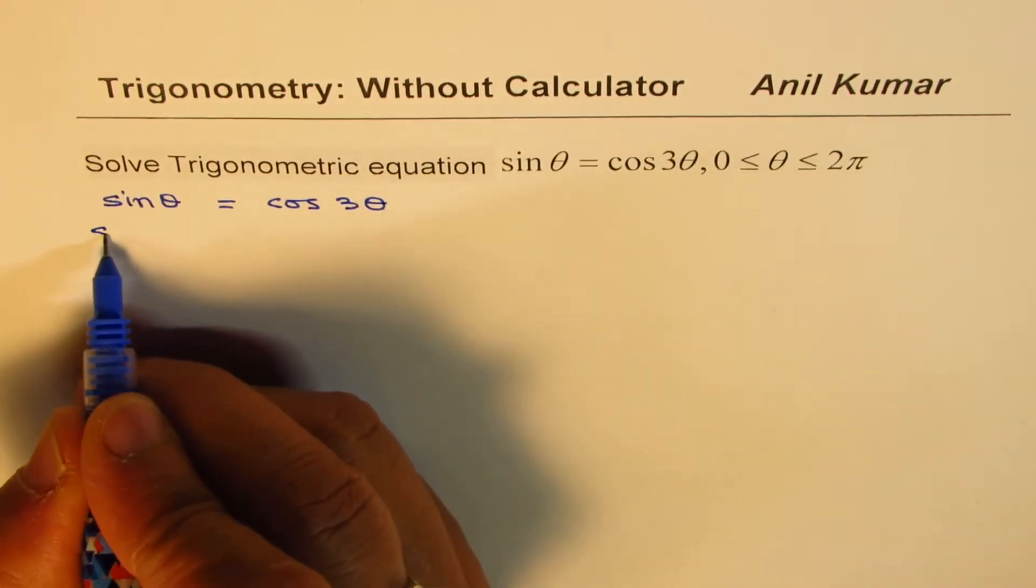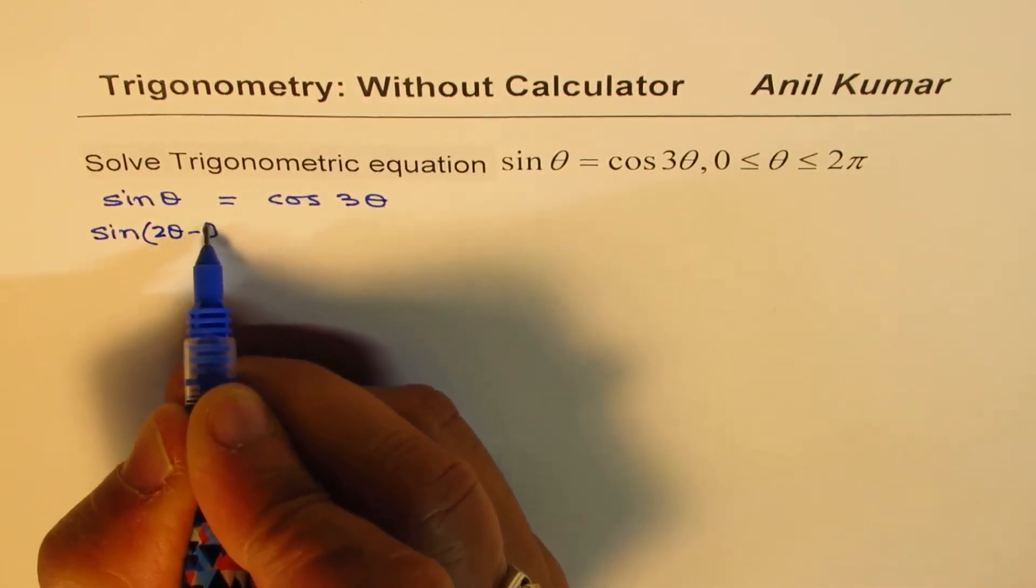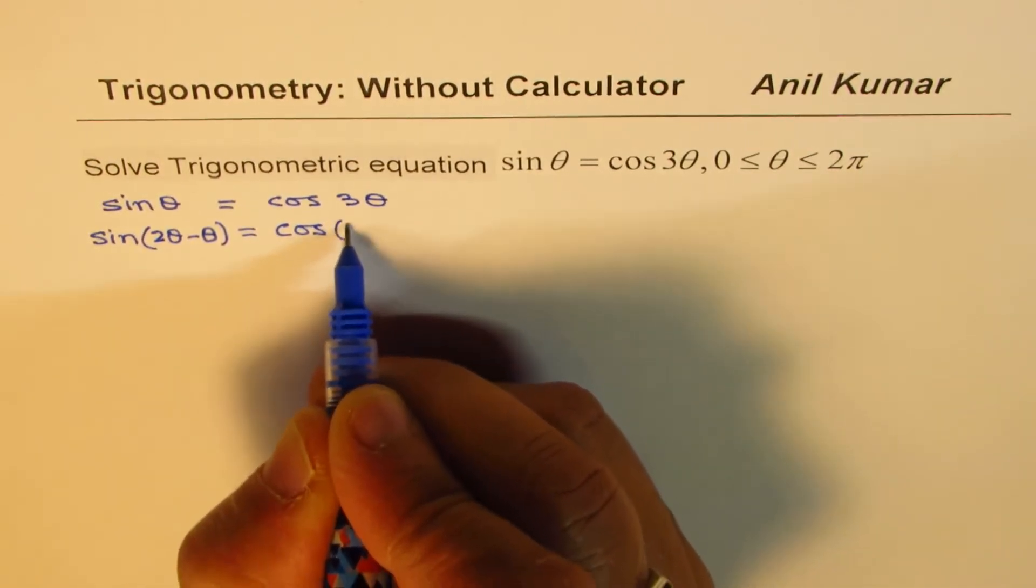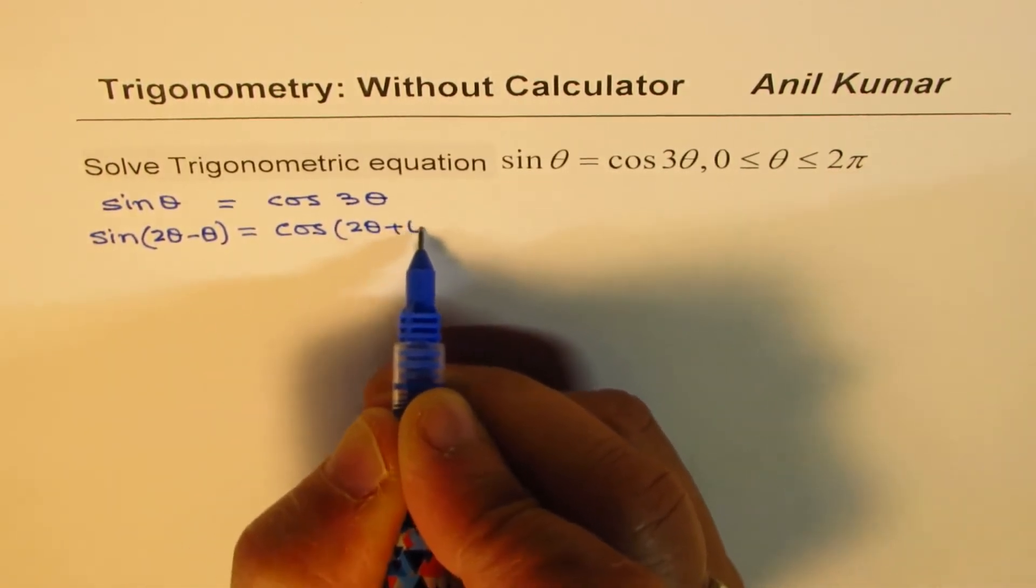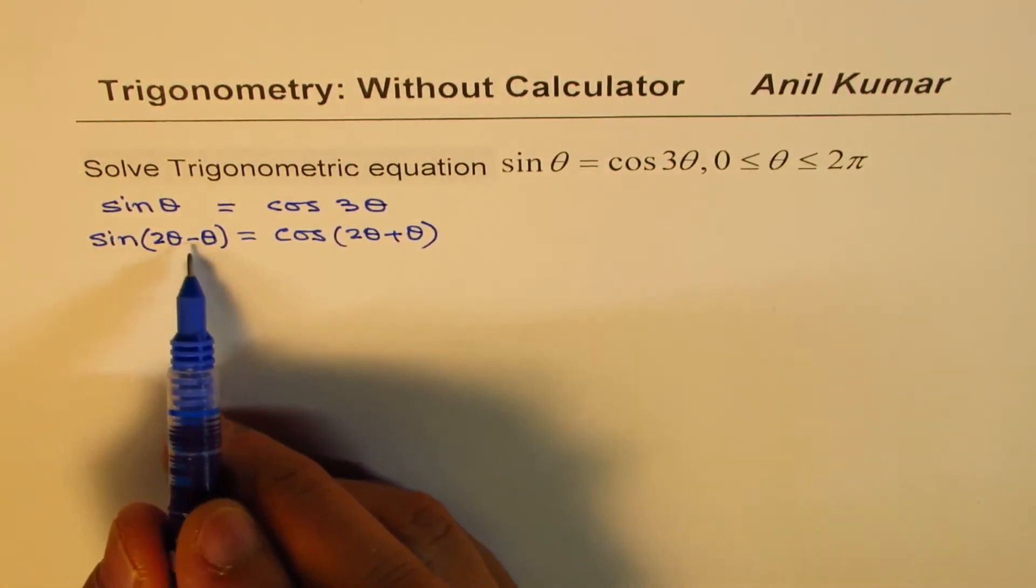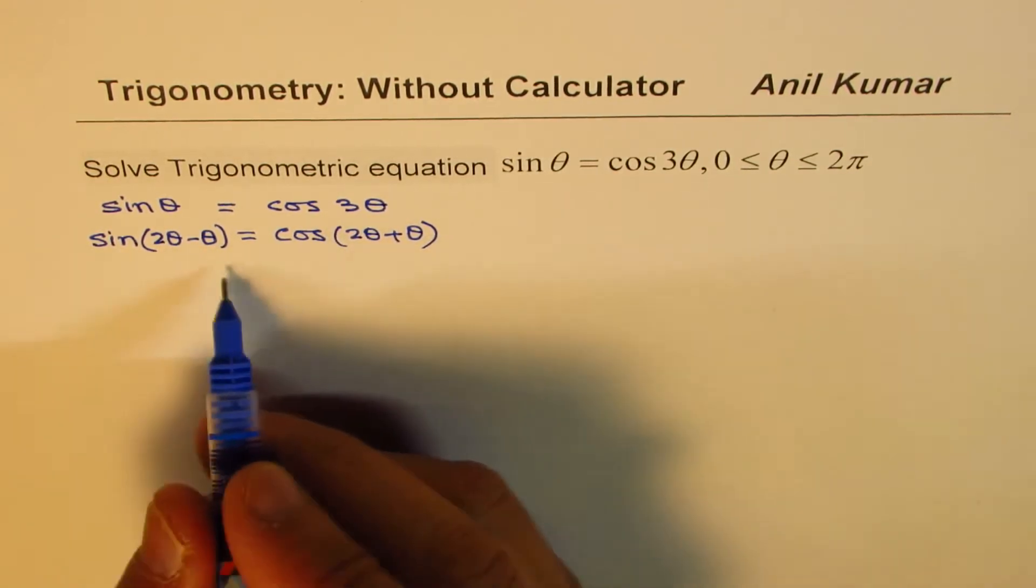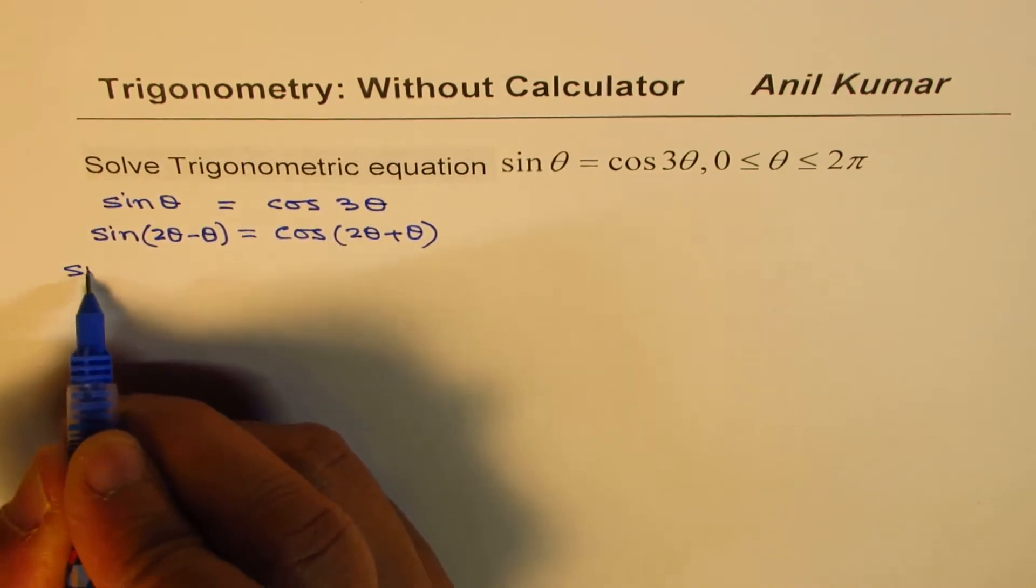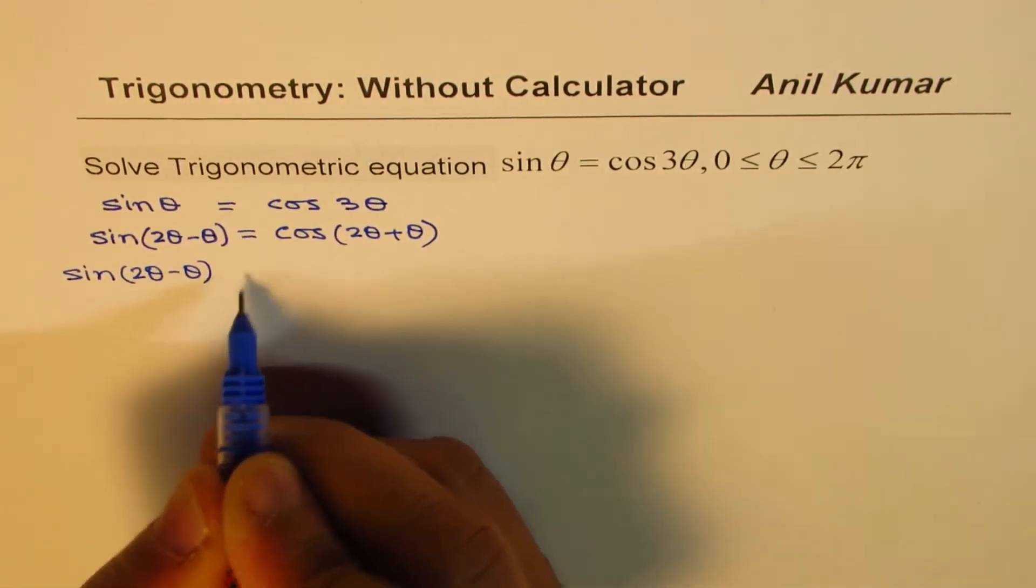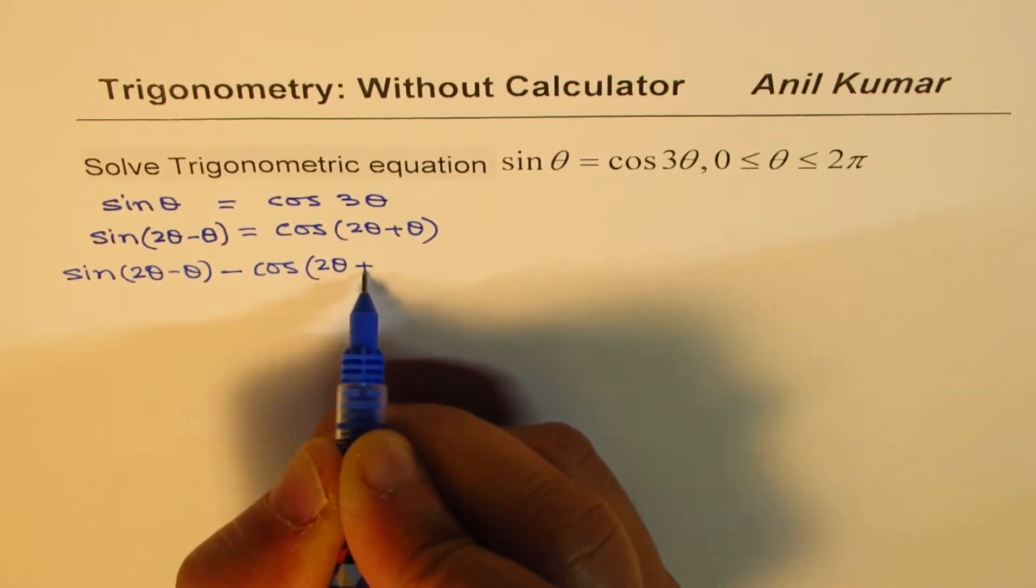So we can do this as sine 2 theta minus theta, which is theta. And cos 3 theta could be written as cos of 2 theta plus theta. Let's bring them all together on one side. So I could write this as sine 2 theta minus theta minus cos 2 theta plus theta.